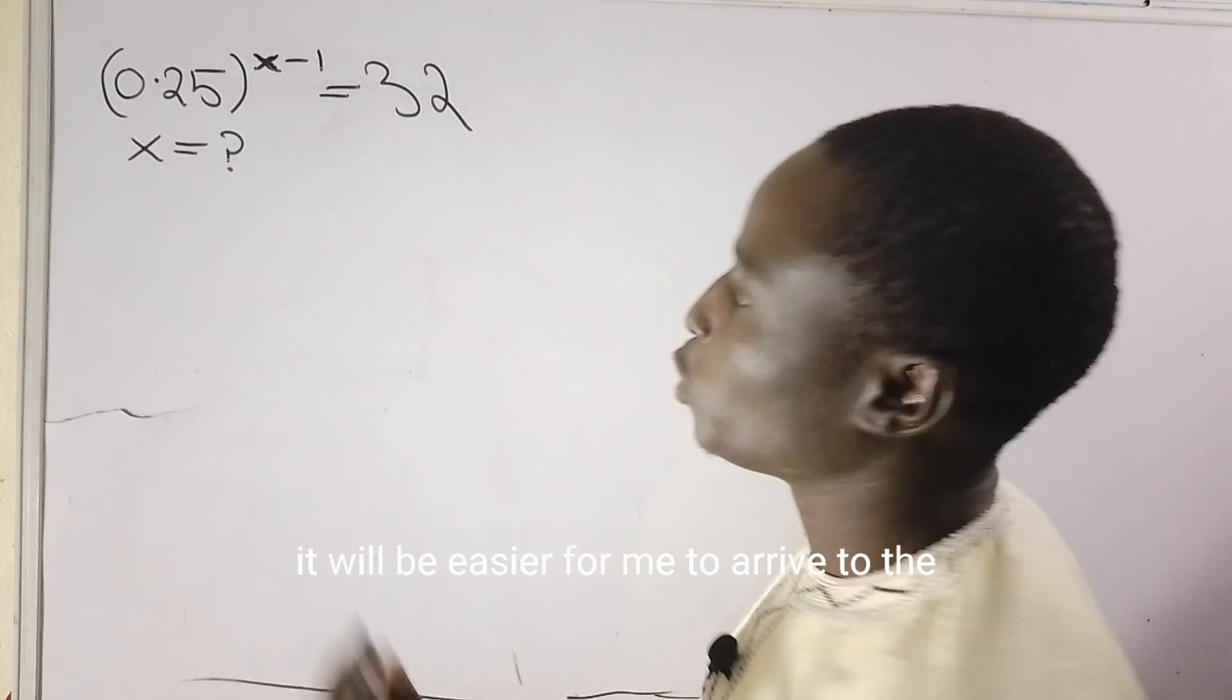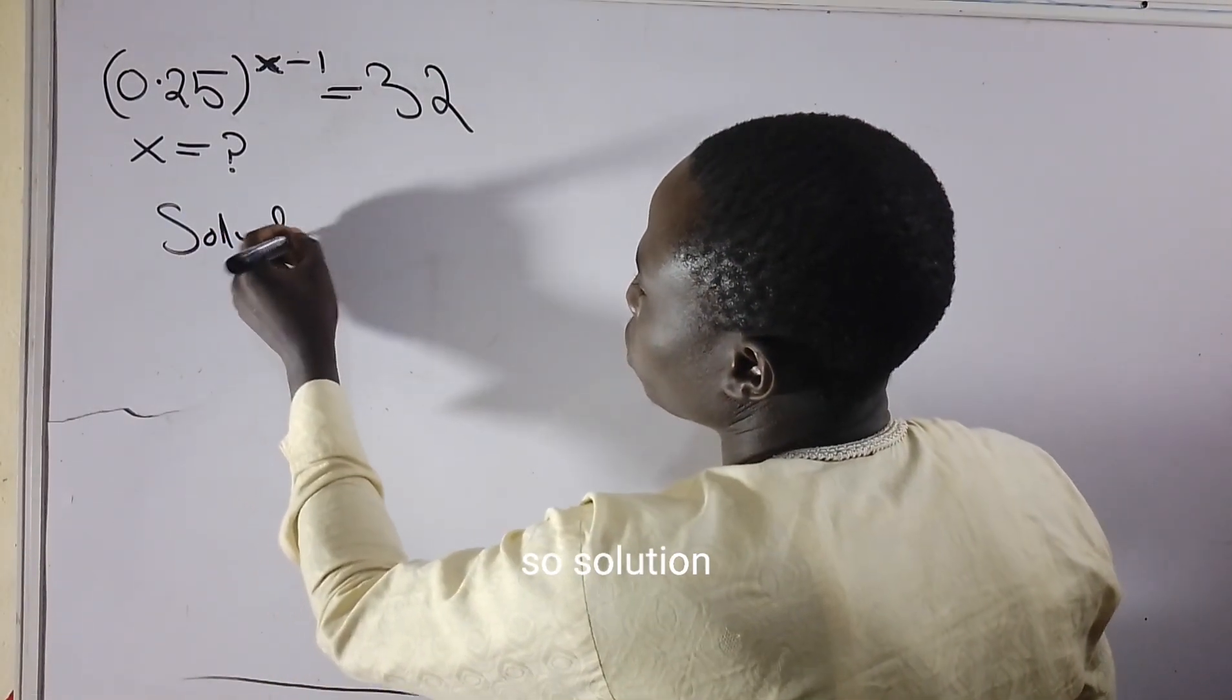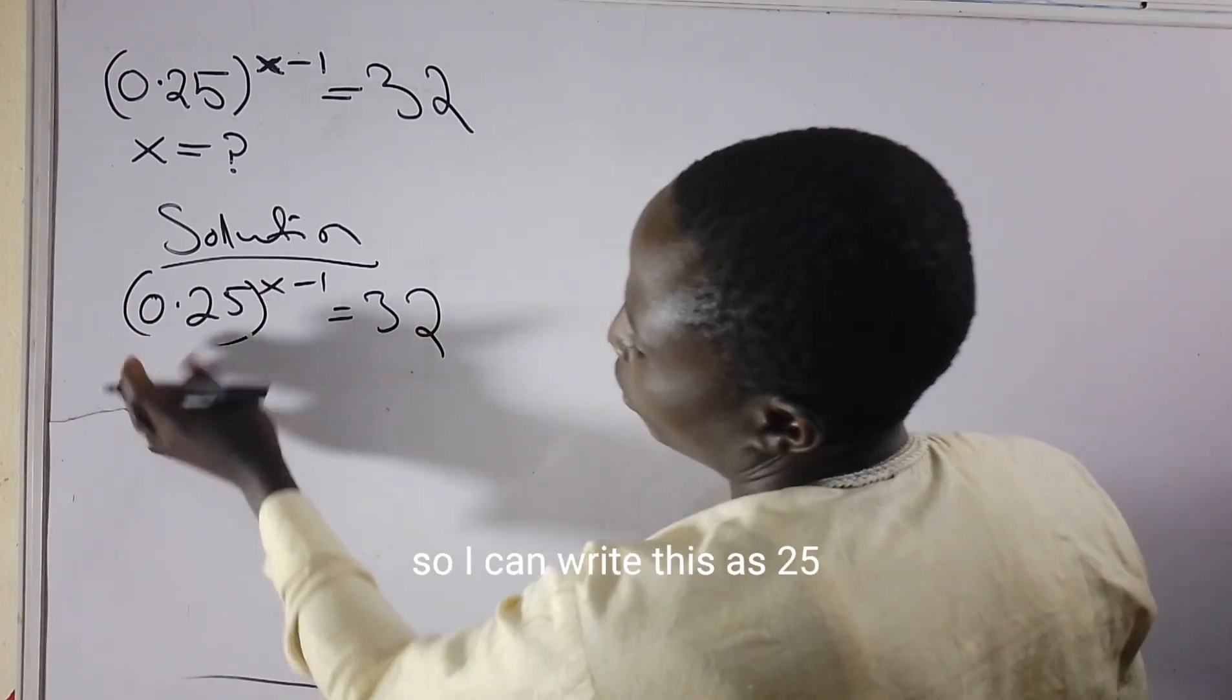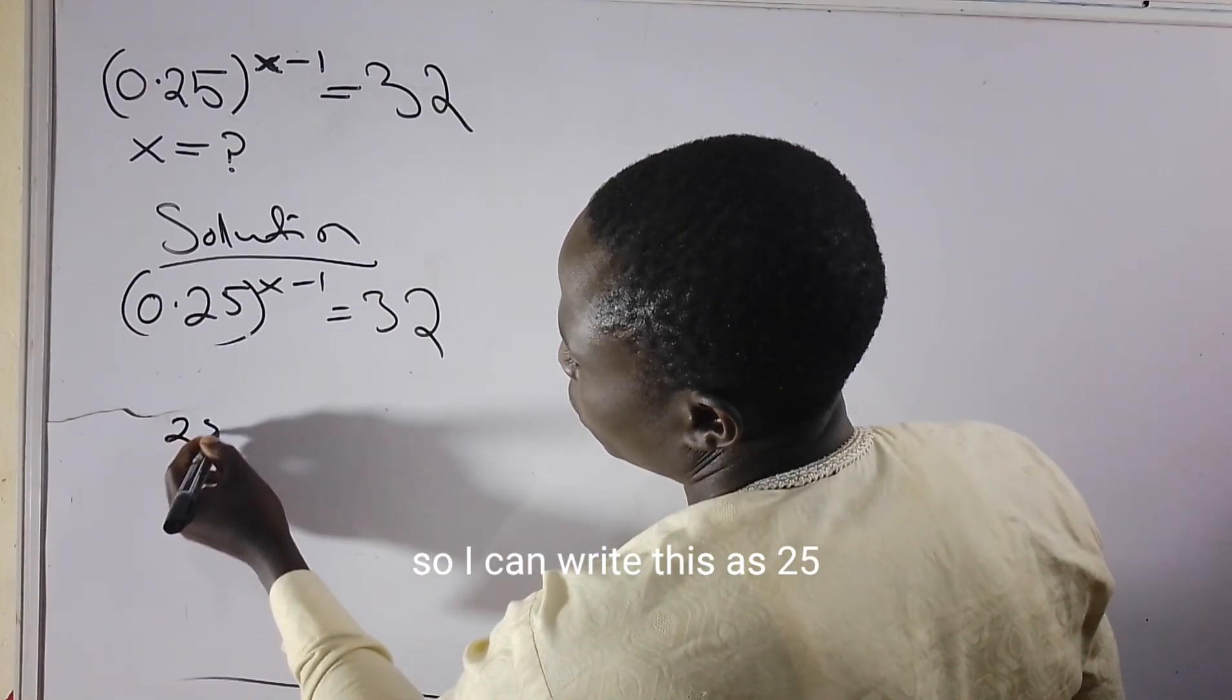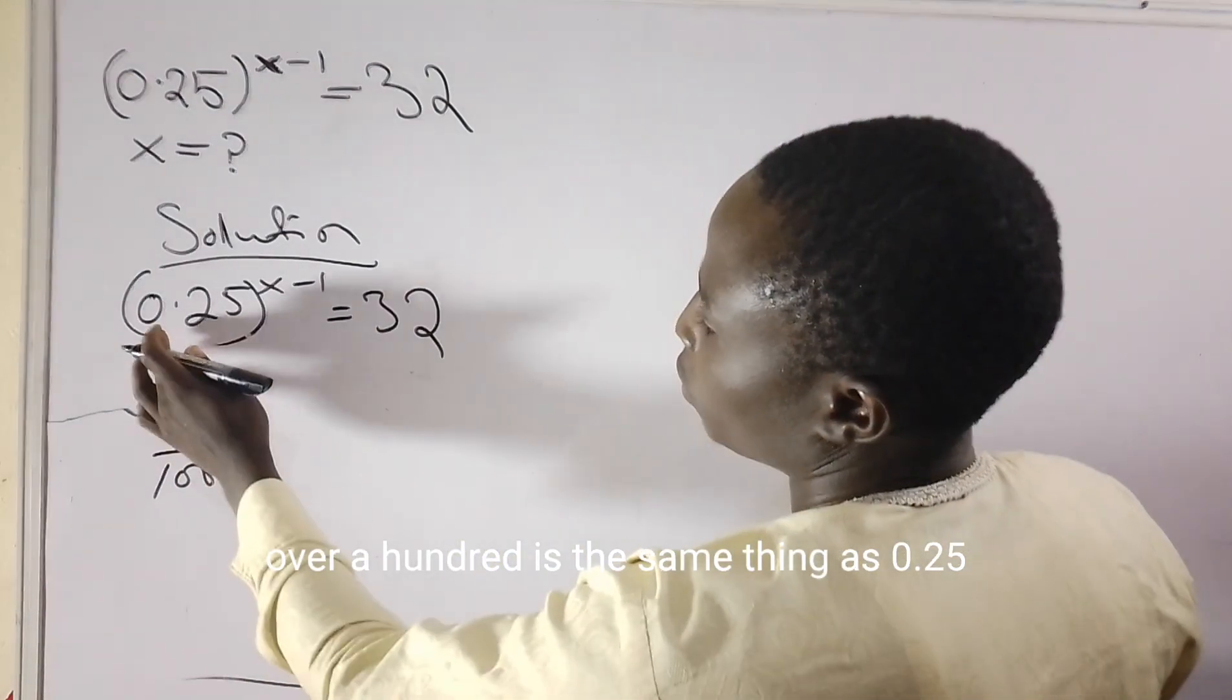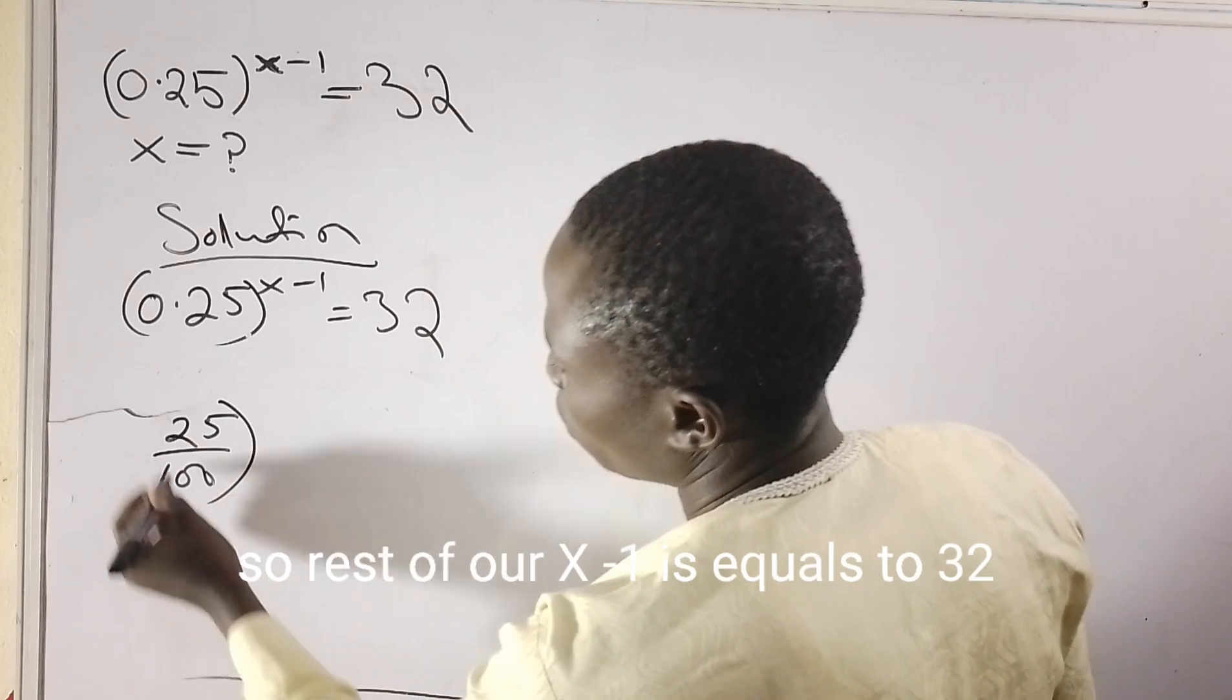Solution: I have 32, so I can rewrite this as 25 over 100, which is the same thing as 0.25.